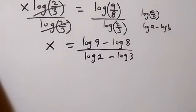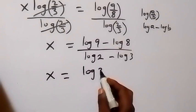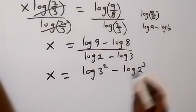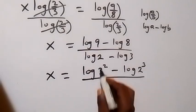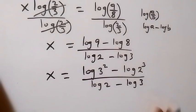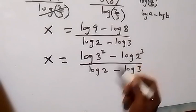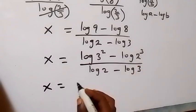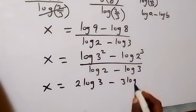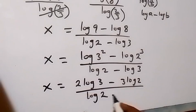And the same way we can simplify further. This will become x equals to log 3 squared — that's 9 — then minus log 2 cubed — that's 8 — over log 2 minus log 3. And when we apply the power law of logs, we can take 2 to the front and 3 to the front. So x now equals to 2 log 3 minus 3 log 2, then over log 2 minus log 3.